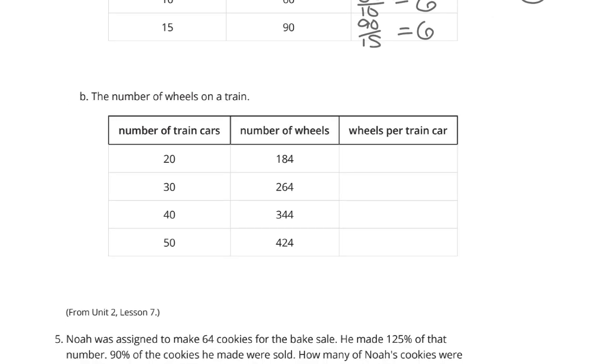Next, the number of wheels on a train. Well, wheels per train car. If we took 184 and divided by 20 wheels per car, we would get 9 and 2/10, which seems kind of strange to begin with. But then we take 264 and divide by 30. And we're going to end up with 8 and 8/10. So it's not proportional here.